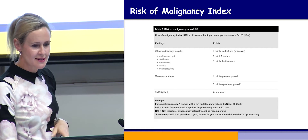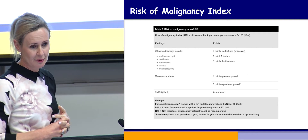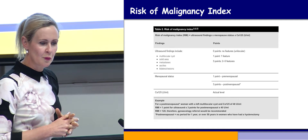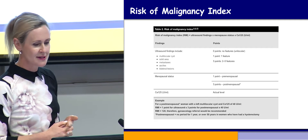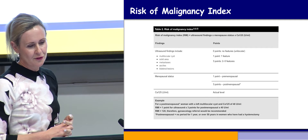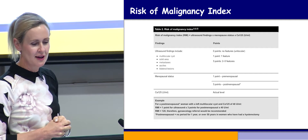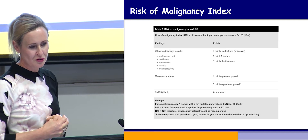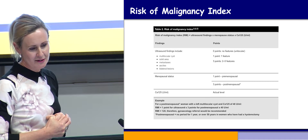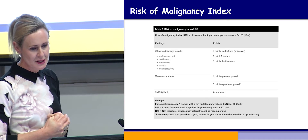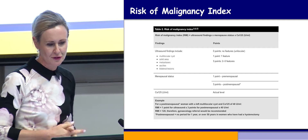Once we receive these cysts, we use the Risk of Malignancy Index (RMI) to assess whether it's likely benign or malignant. We look at the ultrasound, menopausal status, and the tumour marker CA125. You get more points if you're postmenopausal, and the higher the CA125, the more points you get. An RMI of more than 200 is almost certainly a gynaecological malignancy, and an RMI between 120 and 200 is moderate risk, and gynaecological referral is recommended.